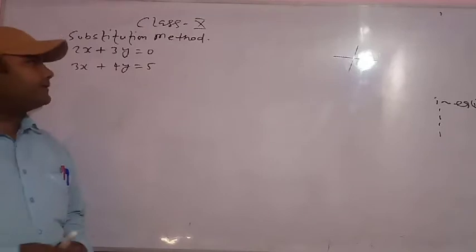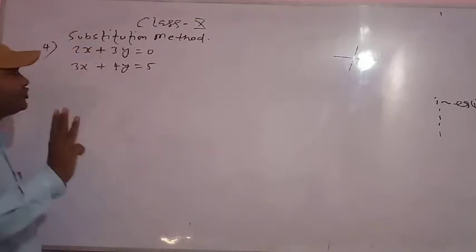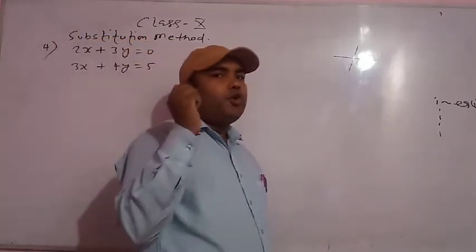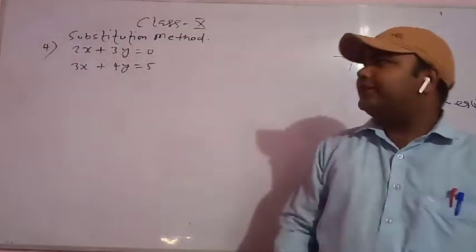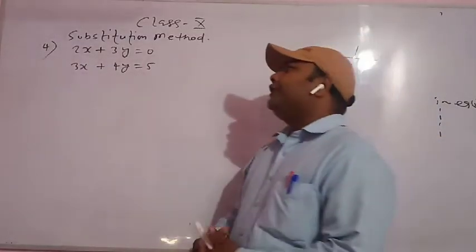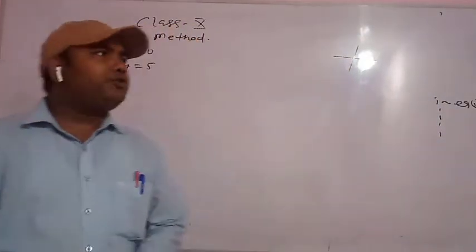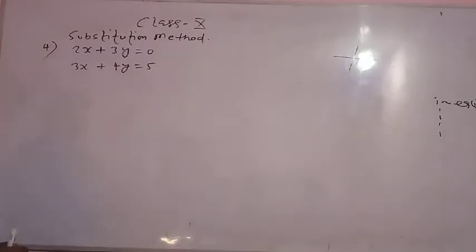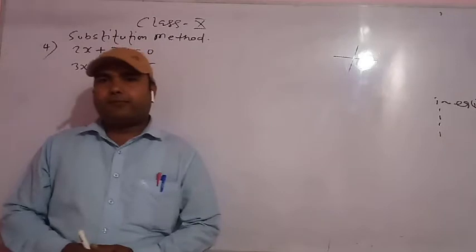Last year we studied three questions of the specification method. Today we will do the fourth question: the first equation is 2x plus 3y is equal to 0, and the second equation is 3x plus 4y is equal to 5.